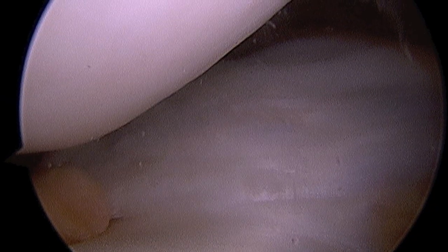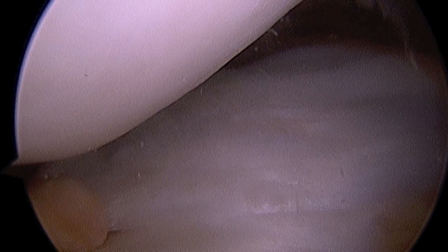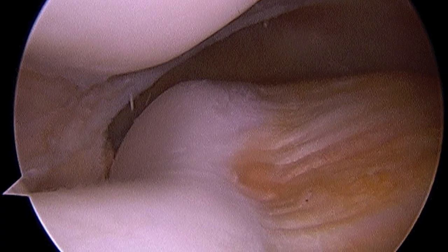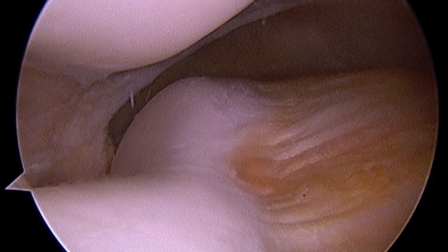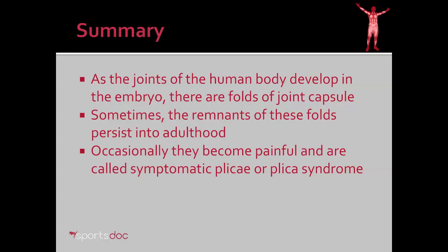Here again is the before shot with the plica interposed between the kneecap and the groove, and there you see after it's been excised. So in summary, as the joints of the human body develop in the embryo, there are normal folds of joint capsule that occur during that development. Sometimes remnants of these folds persist into adulthood, and occasionally they become painful — they're called symptomatic plica or plica syndrome.